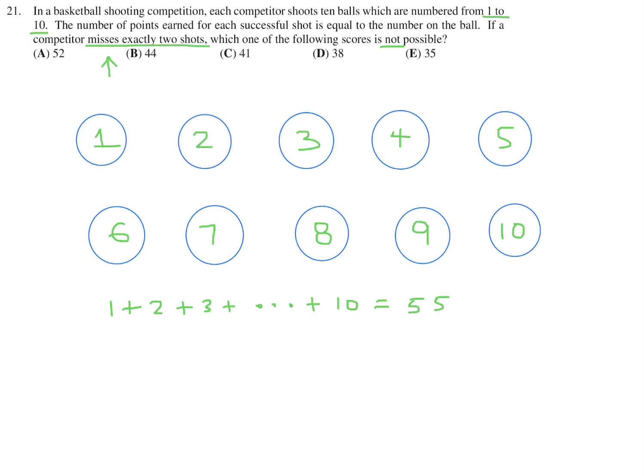Now let's say you missed this one and this one. That would mean you would have 55 minus 1 point minus 2 points, which is 52 points. So this is possible. But if you miss the balls that have a 9 and a 10, your score will be 55 minus 9 points minus 10 points, which is 36 points. You cannot have a score less than 36 if you're missing only two shots. 36 is the lowest. So 35 is not possible because the lowest score you can get under the conditions of the question is 36. The answer is E.